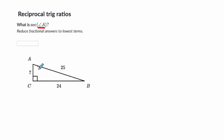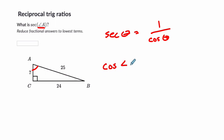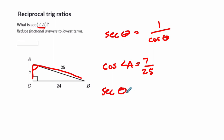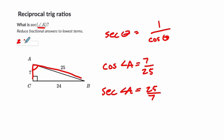Here, secant of angle A. Identify angle A. Secant of theta is the reciprocal of the cosine of theta — you might want it to be the reciprocal of sine because it starts with S, but it is the reciprocal of cosine. So I find the cosine first. Cosine of angle A is the adjacent side, 7, over the hypotenuse, 25. Its reciprocal is the secant, so it's 25 over 7. Seven twenty-fifths times what fraction equals 1? That's the secant — it's 25 sevenths — and there's nothing to reduce.